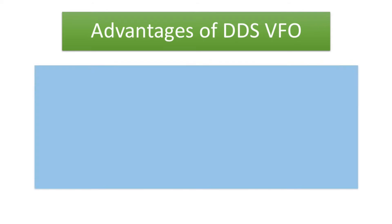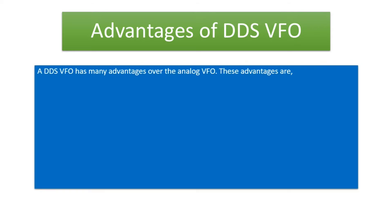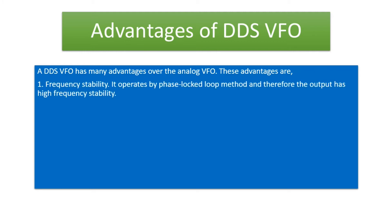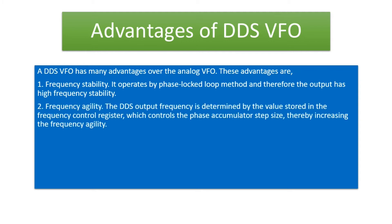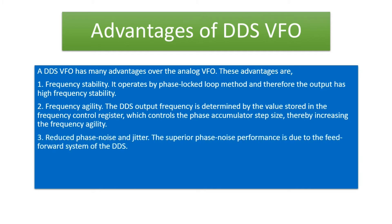Advantages of the DDS VFO. A DDS VFO has many advantages over the analog VFO. 1. Frequency stability: it operates by phase-locked loop method and therefore the output has high frequency stability. 2. Frequency agility: the DDS output frequency is determined by the value stored in the frequency control register which controls the phase accumulator step size, thereby increasing the frequency agility. 3. Reduced phase noise and jitter: the superior phase noise performance is due to the feed-forward system of the DDS.